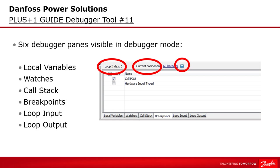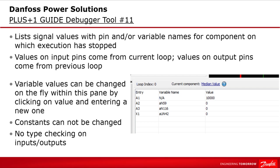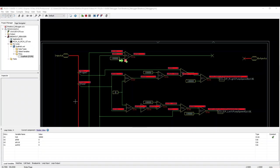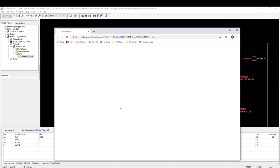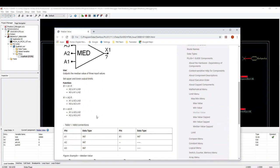Starting with the local variables tab, which can be used to inspect values and change variables on the fly. It lists signal values with pin and/or variable names for the component on which execution has stopped. The first column on the left is 'Entry', which lists the entries of the nets connected to the current component — items in this column correspond with labels shown in the picture of the component in the PLUS1 Guide user manual and help file. The 'Variable Name' column lists the net variable name or PLC variable name, exactly as shown in the Guide drawing area during debugger mode.